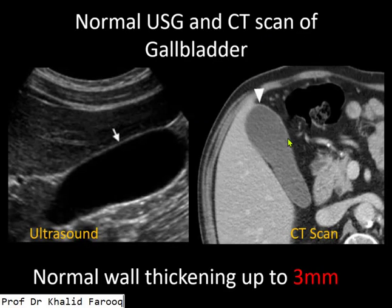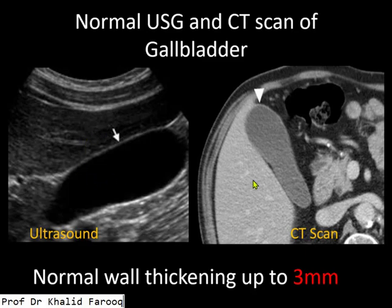There are two best imaging modalities for the assessment of cholecystitis: number one ultrasound and number two CT scan. When we compare these two, ultrasound is the routine imaging modality while CT will be considered the best imaging modality. We know that normal wall thickening of the gallbladder should be less than three millimeters.